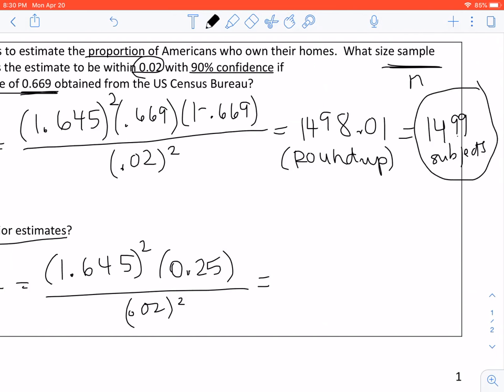And for our second one, working this one out for part B, we get 1,691.26, which again, we always need to round up. And when we round up, you get 1,692 subjects.